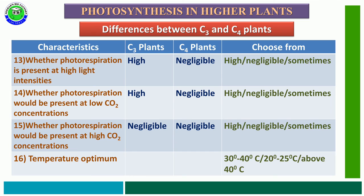The sixteenth characteristic feature is the optimum temperature for photosynthesis. The options are 30–40°C, 20–25°C, or above 40°C. In C3 plants, the optimum temperature is 20–25°C, but in C4 plants, the optimum temperature is 30–40°C.